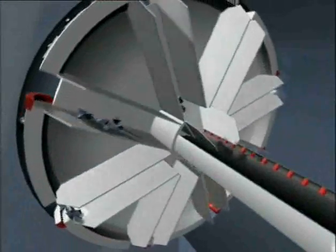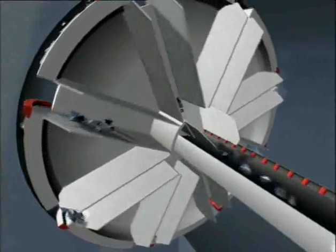each roller cutter chips the solid rock away. The broken rock falls onto a bucket wheel and is then transferred onto a conveyor belt behind the cutting head.